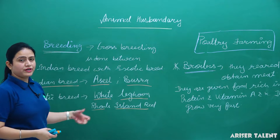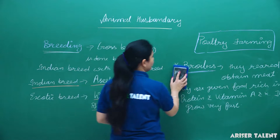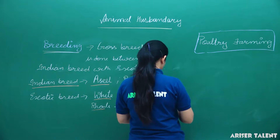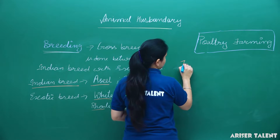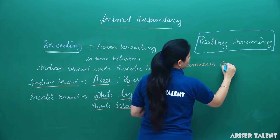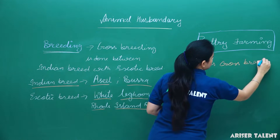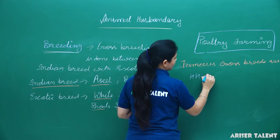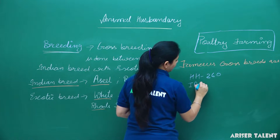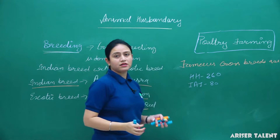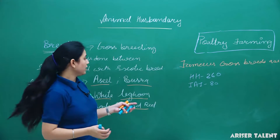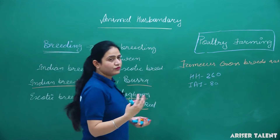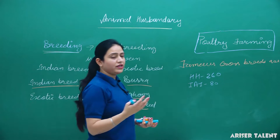When cross-breeding is done between Indian breed and exotic breed, a new crossbreed is developed. Famous crossbreeds are HH-260 and IA-180.